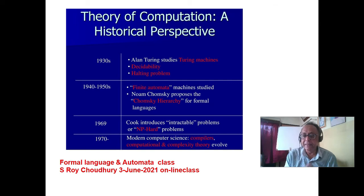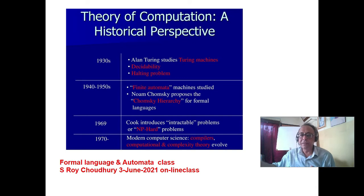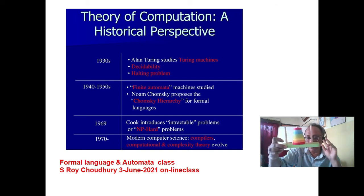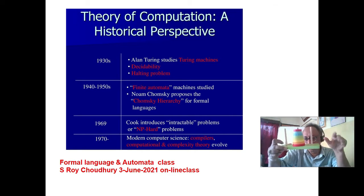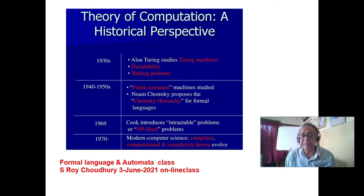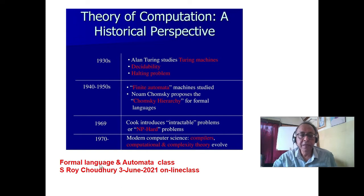Another complexity example is the Tower of Hanoi, which is a 2^n problem — specifically 2^n minus 1 moves. If you have 3 discs you need 7 moves; if you have 4 discs you need 15 moves. Whenever n goes to the power, that is called an intractable problem.